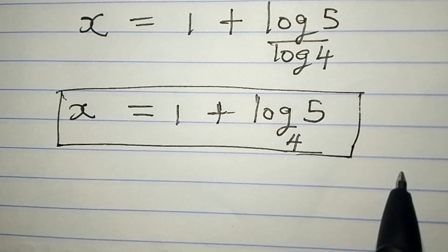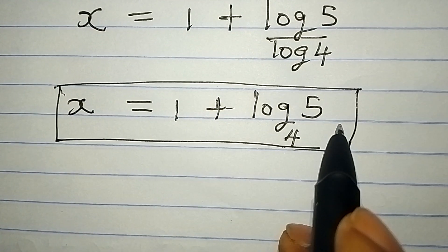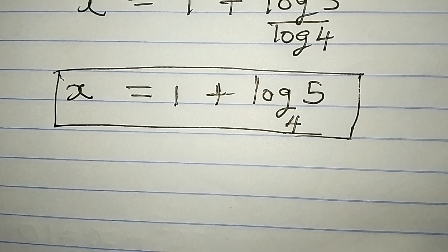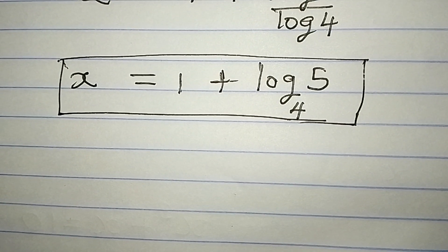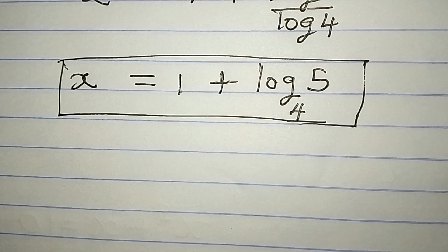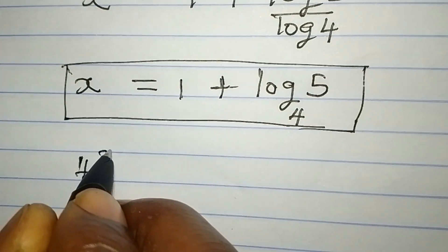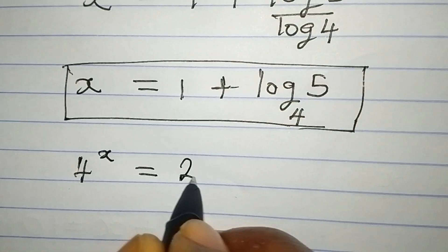But if you want to use calculator, you can press log 5 to base 4 and you get your answer. Although it will be in decimal form. But now, let's put this value back into this equation. 4 to the power of x equals 20.